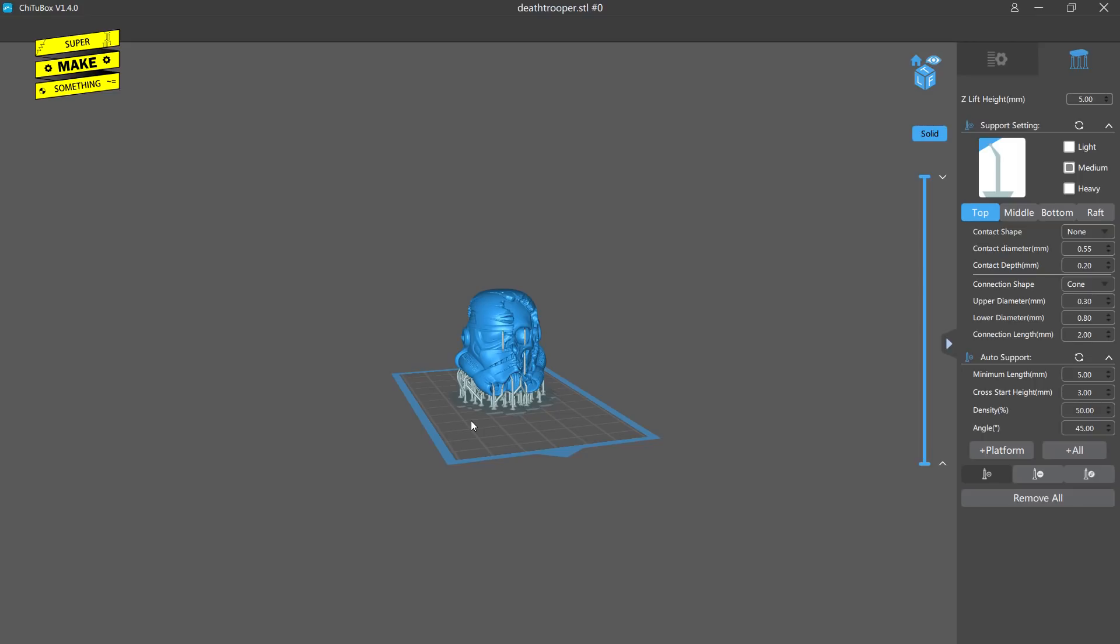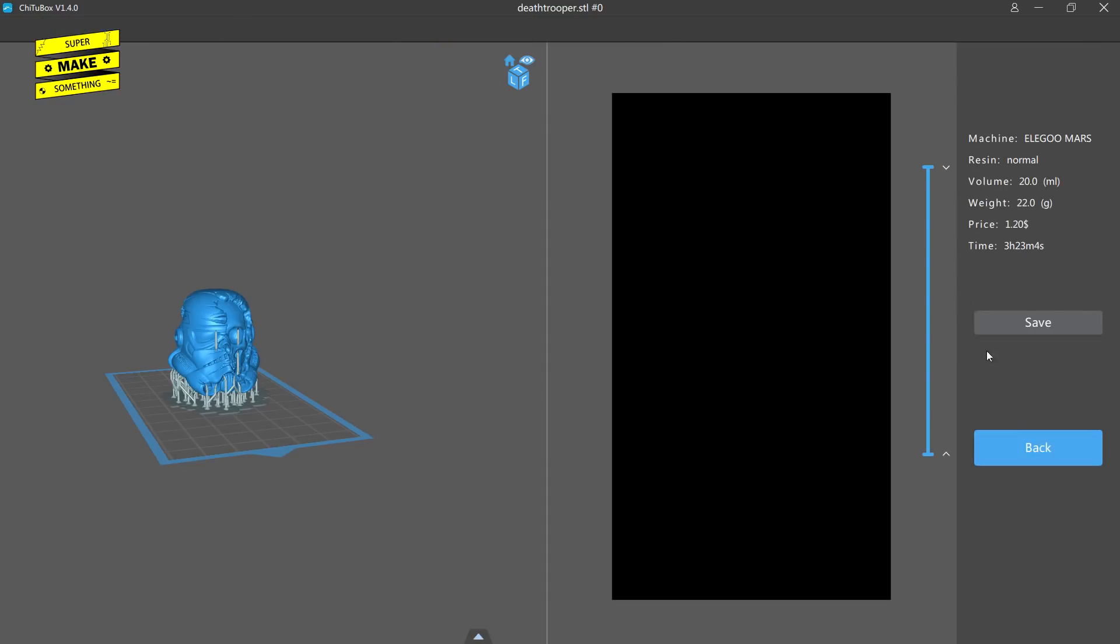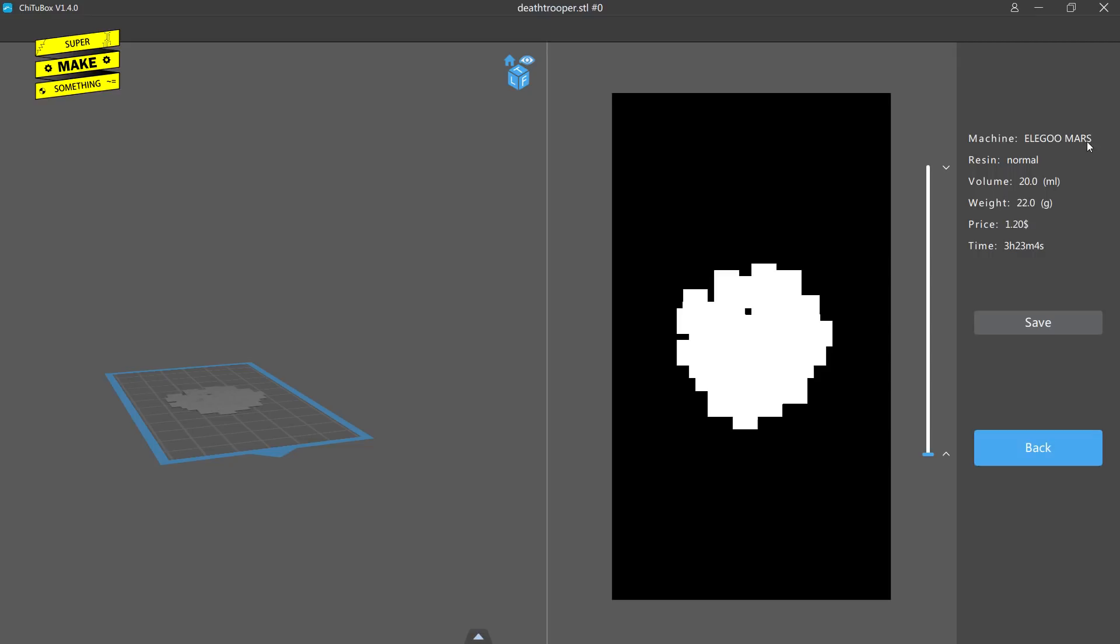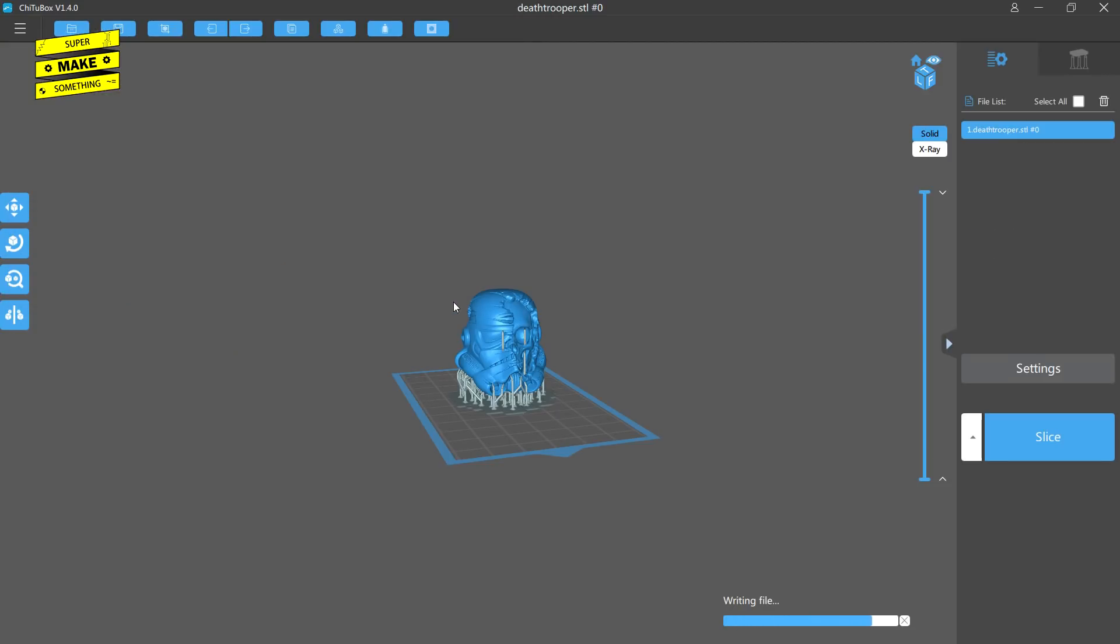Satisfied with my model settings, I navigated back to the part tab, and clicked the slice button, which generated a cb.ddlp file that contains the print instructions for this model. After slicing was complete, a new window popped up, which allowed me to scroll through and preview each print layer, kind of like the model had been scanned using an MRI, which I thought was pretty cool. This window also contained information about my resin type, required resin volume and weight, an estimated price of the print based on the cost of the resin, and the total print time. Happy that everything looked correct, I finally clicked the save button to store the print instructions on a flash drive, and closed Cheetoo box.